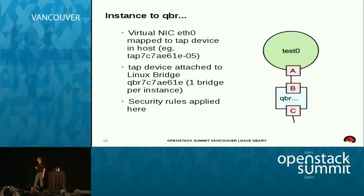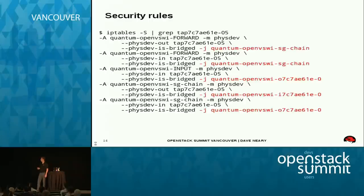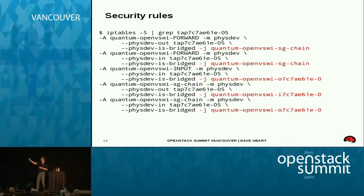What happens from the instance? eth0 on your Nova instance is connected to a tap device in the host namespace. That tap device is linked to a Linux bridge — that's where security rules are applied. When you define security rules associated with an instance, there's one of these per instance on a compute node. There's a set of iptables that say what's allowed for that instance. You see the same hex string — 7C7AE61E — appearing throughout the chain, with two tables defined for output and input.